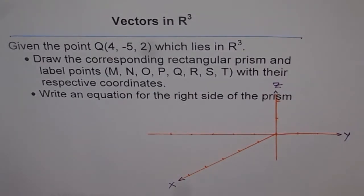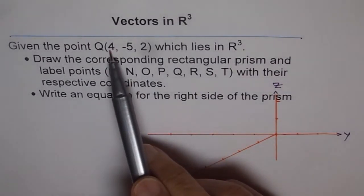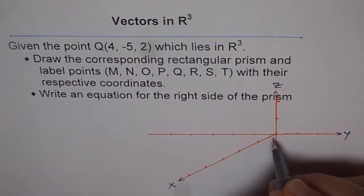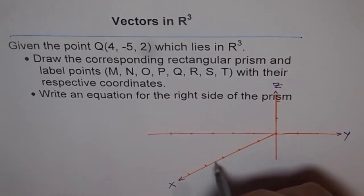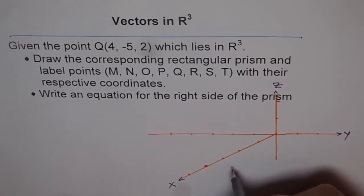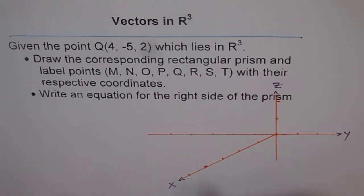Now in this coordinate system, we'll try to plot the point Q, which is 4, minus 5, 2. So when we say 4, that means, well, let me write down here. This is our y. That is x.